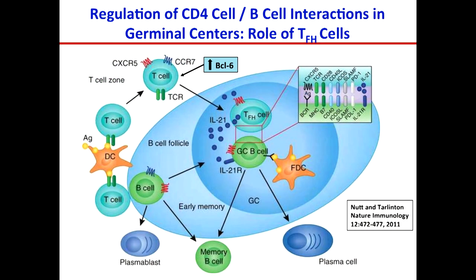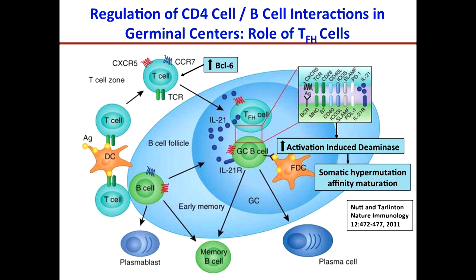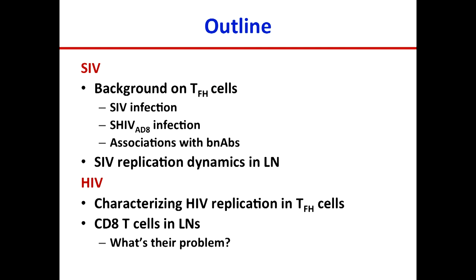T follicular helper cells interact with germinal center B cells through all those interactions Hendrick described. Through this interaction, they upregulate activation-induced deaminase, or AID, in the B cell, which leads to somatic hypermutation and affinity maturation of the antibody response. I will talk about: T follicular helper cells and SIV replication and the induction of broadly neutralizing antibodies; SIV replication dynamics in lymph nodes; characterizing HIV replication in T follicular helper cells; and CD8 T cells — what's their problem in the lymph node?